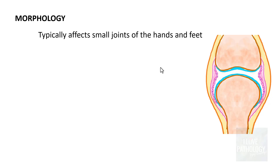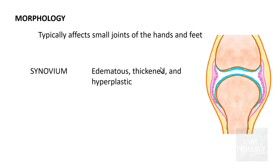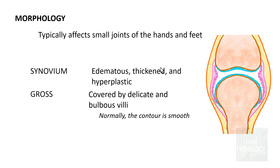Rheumatoid arthritis typically affects small joints of hands and feet where the synovium is edematous, thickened and hyperplastic. Grossly it appears as if it is covered by delicate and bulbous villi. Normally the contour of the joint surface is very smooth, whereas in rheumatoid arthritis it is seen as villus protrusion of the synovial tissue.